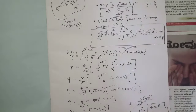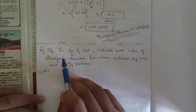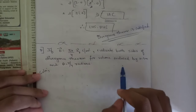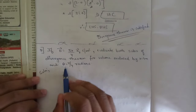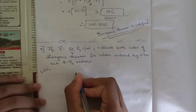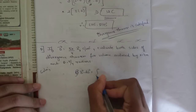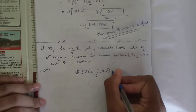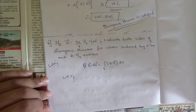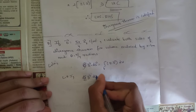The next question is: if D = φr/4 · ar (C/m²), evaluate both sides of the divergence theorem for the volume enclosed by r = 4 m and θ = π/4 radians. The divergence theorem states: ∯ D · ds = ∭ (∇ · D) dv. Let's first solve the LHS: the surface integral of D · ds.